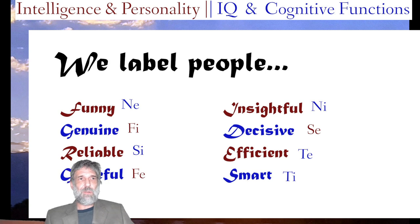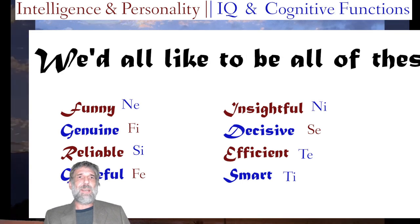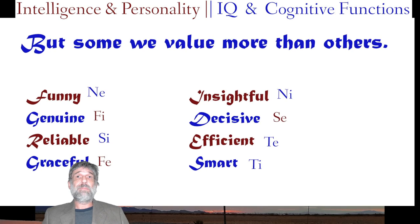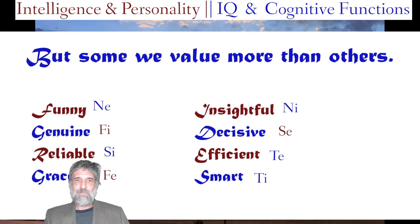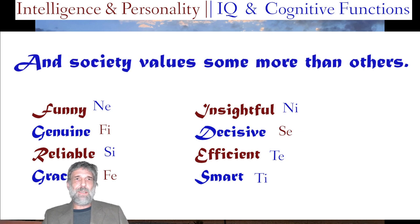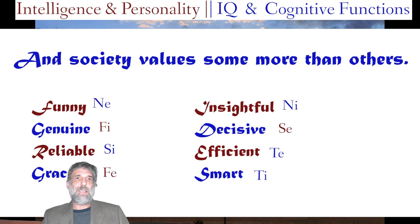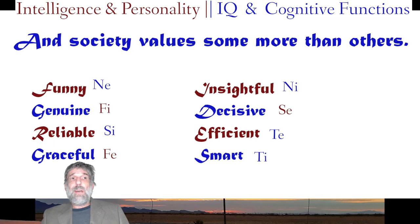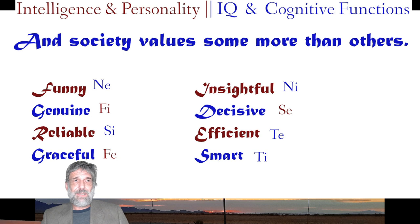Does that mean it's correct to ascribe the label 'smart' to introverted thinking people? Well, we'd all like to be all of these, but some we value more than others. Society — or at least school, where most of us start — values reliability, efficiency, and some amount of decisiveness. It values grace a lot. It doesn't really value genuineness a lot, and it doesn't value funniness very much.